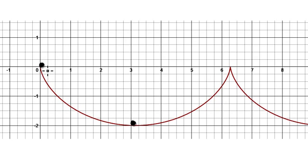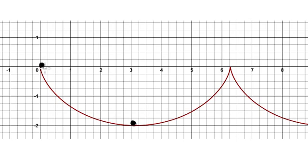We are going to try and find the time it takes to travel from the origin to the lowest point. As it turns out, the cycloid is actually the fastest time that the marble can fall from the top to the bottom. It is the fastest time.